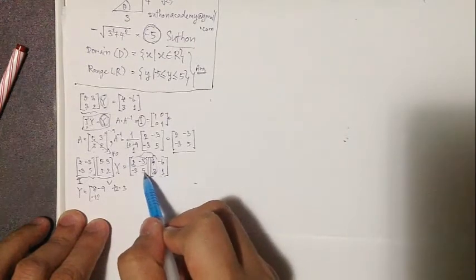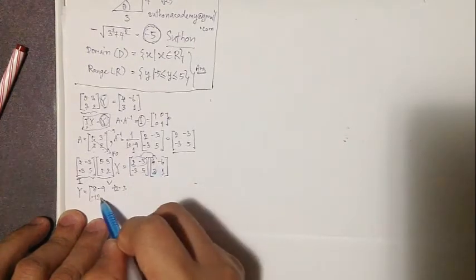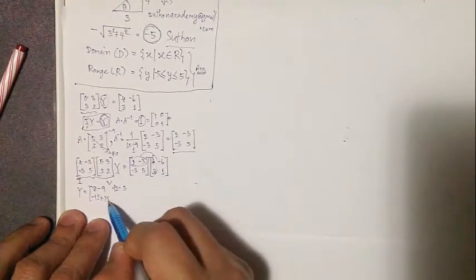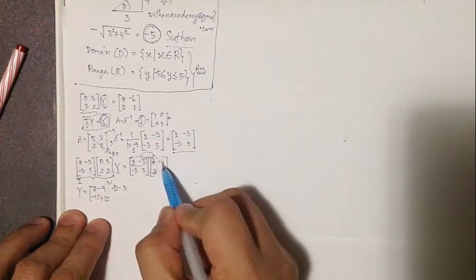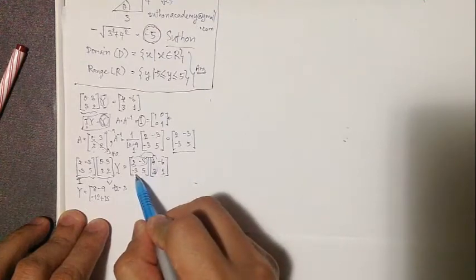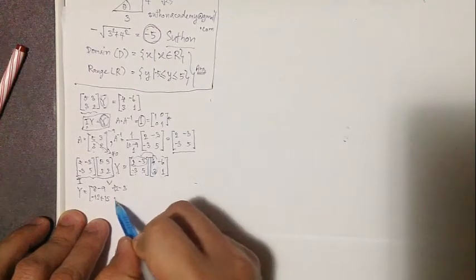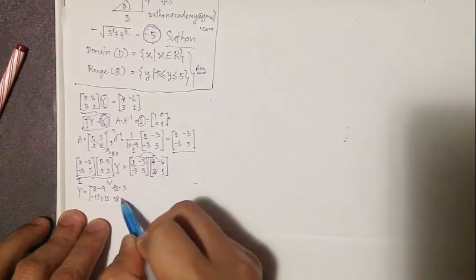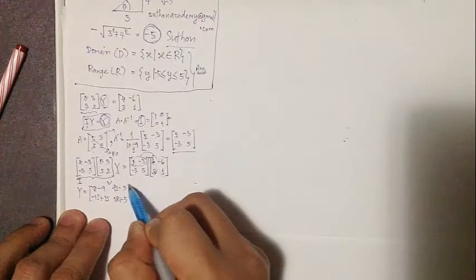15 plus 15, right? And this one, -6 times -3 equals 18, right? And 1 times 5 becomes 5, okay?